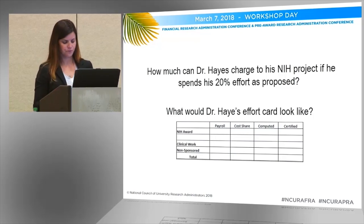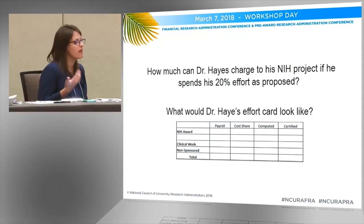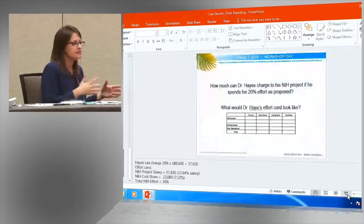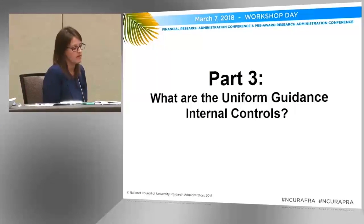At our institution, we do our salary cap corrections on a biweekly or monthly basis. Faculty certify their 20% and wouldn't necessarily need to worry about whether it's cap or not cap — our financial staff makes sure that's correct. Any charges over the cap are moved off, and we have internal controls and a process over that. So effort certification might just show 'I work 20%,' but the actual calculations are documented as supplementary documentation on the backend.